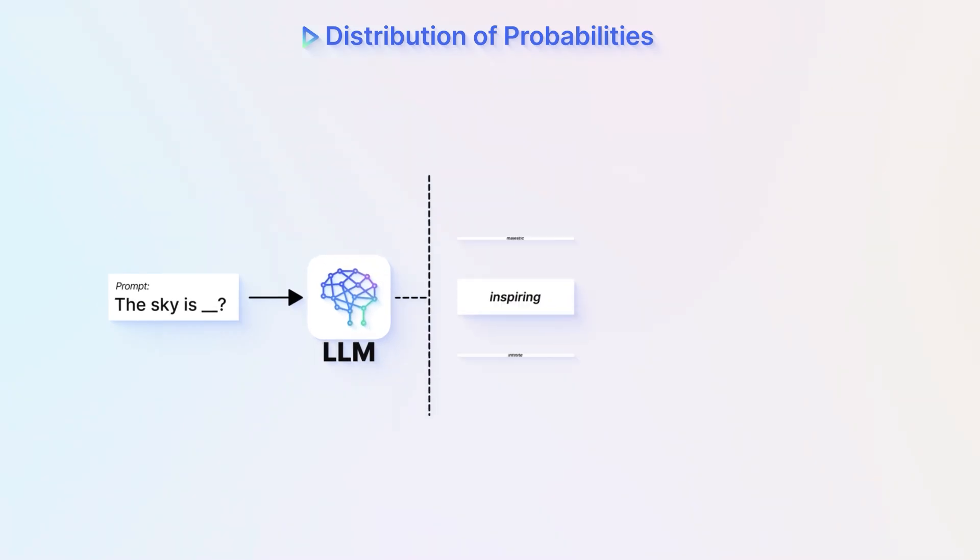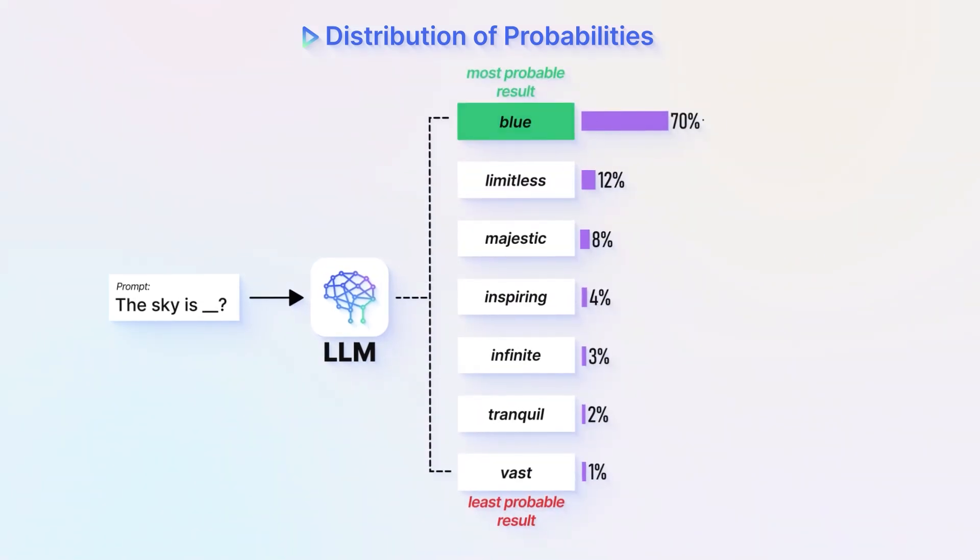We've talked about things you should know about model selection. Now once you've chosen your model, or if you've built your own model, here are some knobs that you can turn to fine-tune the output of the model. Remember, large language models are a probability distribution over sequences of words. So adjusting that process can alter your results, for better or worse.